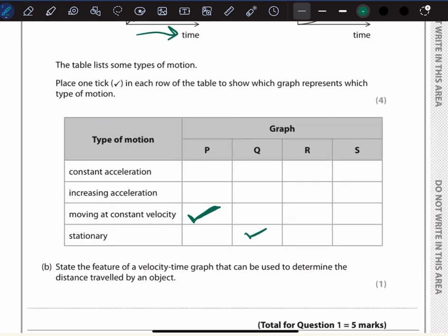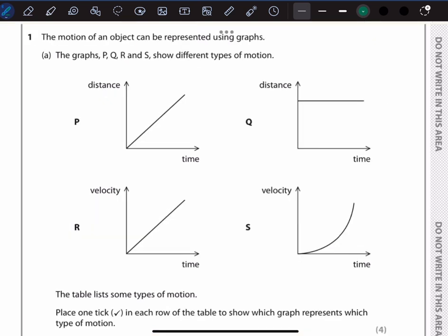Finally, graph S is also a velocity-time graph, but notice how the line is curving upwards. This indicates that the velocity is increasing at an increasing rate, which means that the value of the acceleration, the dv over dt, is also increasing.